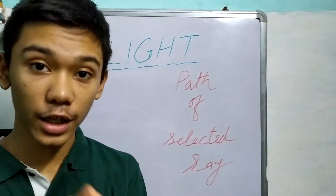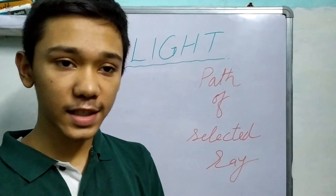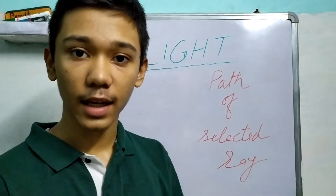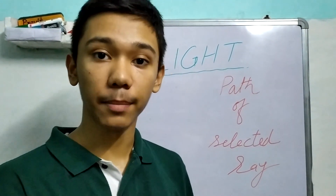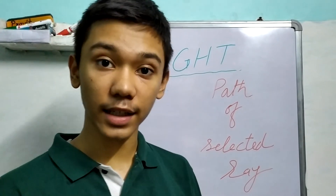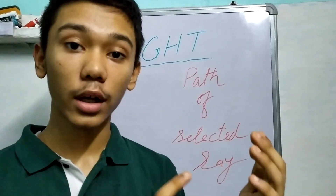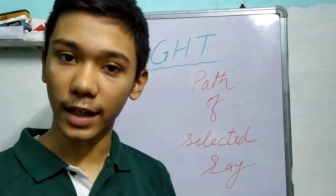Now that you have understood how these rays — a ray parallel to the principal axis, a ray passing through the center of curvature, and a ray passing through the focus — interact with the mirror, in the next videos we will see how we can draw ray diagrams of spherical mirrors.